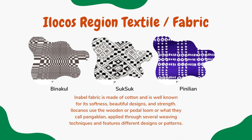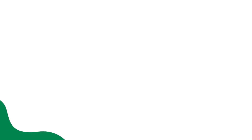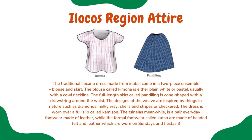These designs are inspired by natural elements found in Ilocos Region textiles. The traditional Ilocano dress made from Inabel is a two-piece ensemble: a blouse called kimona, which is plain white or pastel with a cold neckline, and a full-length cone-shaped skirt called pandiling with a drawstring around the waist. The weave designs are inspired by nature — diamonds, the milky way, shells, and stripes or checkered patterns. The dress is worn over a full slip called camison. Everyday footwear called chinelas are made of leather, while formal footwear called kutso are made of beaded felt and leather, worn on Sundays and fiestas.